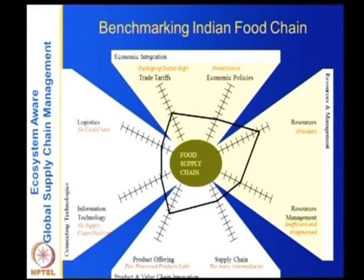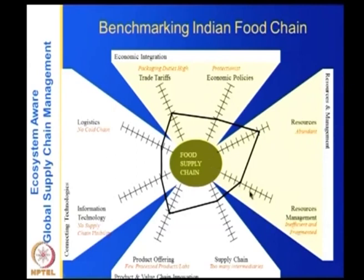Benchmarking the Indian food supply chain using the SES framework: resources are high, but management is very low — inefficient and fragmented. God has been very kind to India in terms of resources, but management is the problem. The supply chain has too many intermediaries and could be far better than it is today.